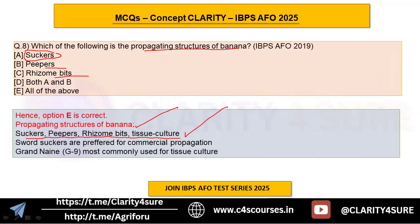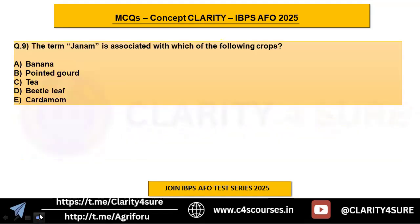For tissue culture, the variety most commonly used is Grand Naine. Also important: suckers are preferred for commercial propagation of banana. Question number nine: the term 'janum' is associated with which of the following crops — banana, pointed gourd, tea, bitter leaf, or cardamom?